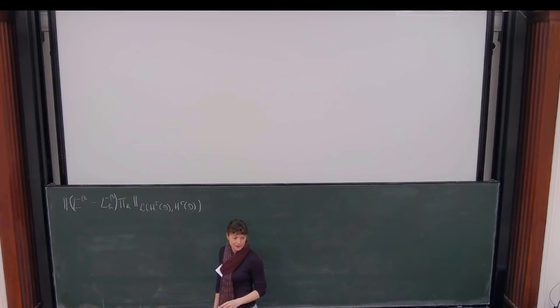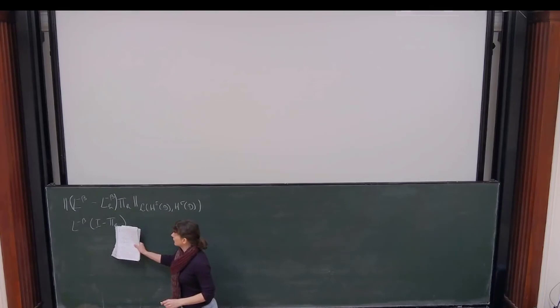So, what we wanted to estimate is this guy. Now, our first remark is that it's, well, of course, not in the article, but for the proof on the blackboard now, it suffices to look at this guy. Because the other part, estimating this, the norm of this guy, where you look at the difference between the L2 projection and the identity. That's standard. Those are standard results in finite elements. We have estimates for that. So, we don't need to worry about that part. And then, thus, we can put the brackets here.